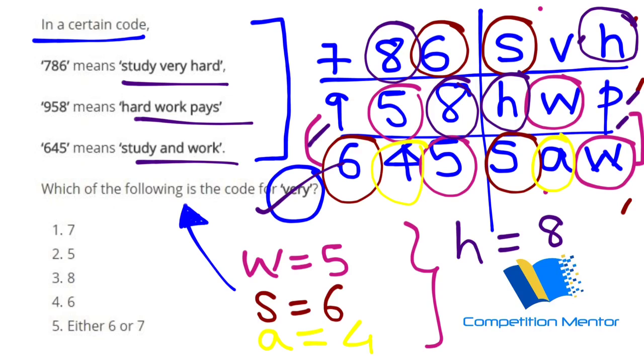And once you can write it, what is the very code answer? V is 7, right? So answer is 7.